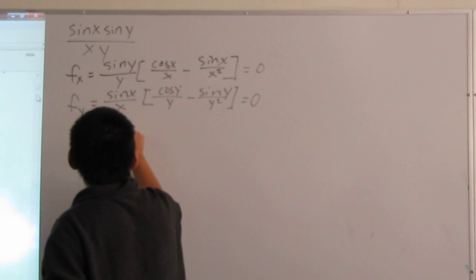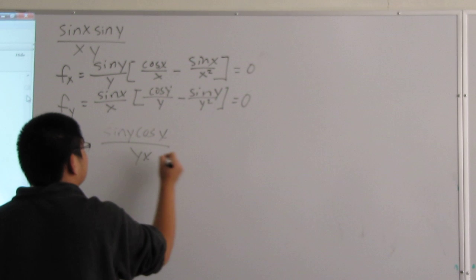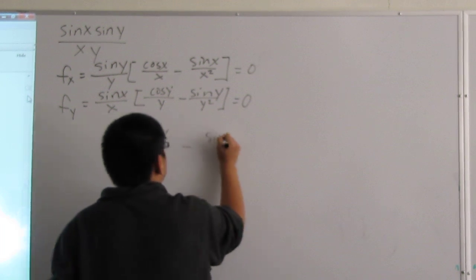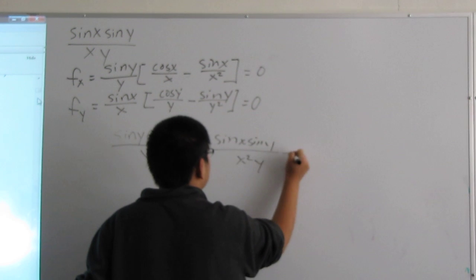you get sine of y cosine of x over xy minus sine of x sine of y over x squared y is equal to 0.